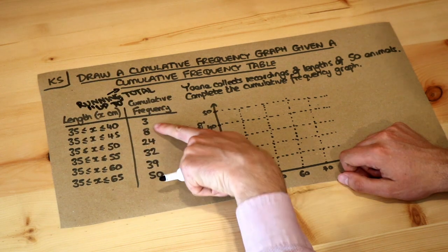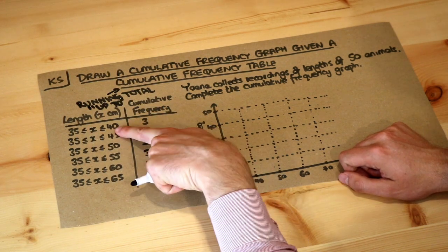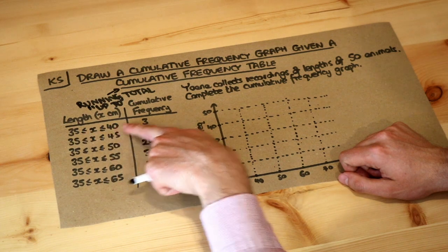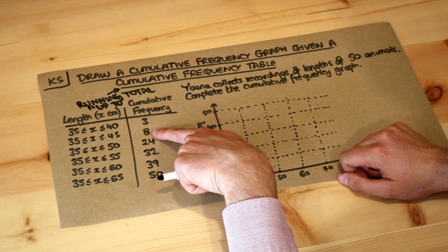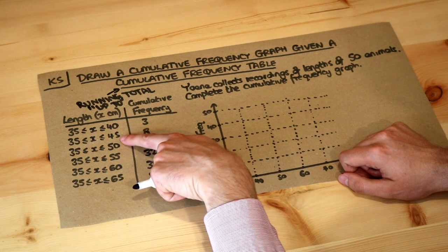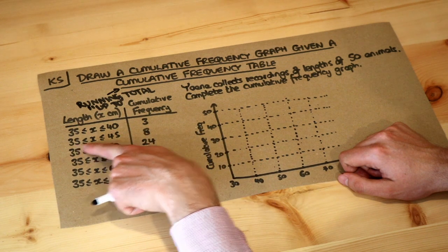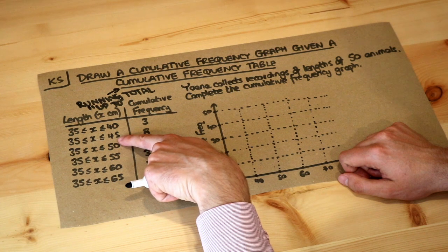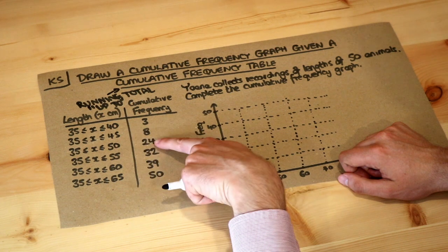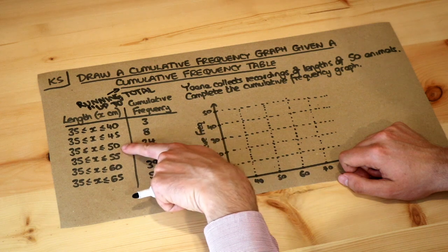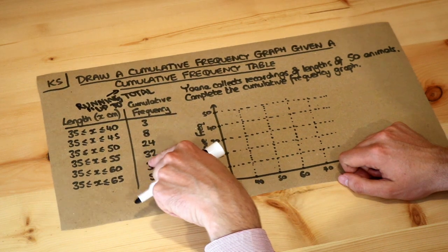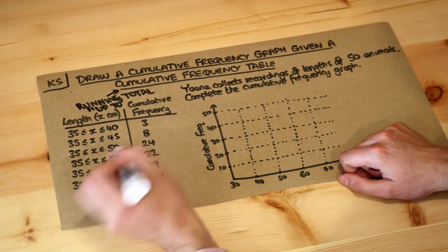So we have three things up to a length of 40, between 35 and 40, and then we have eight animals with a value of up to 45 centimetres — from the starting length of 35 all the way up to 45. Then we've got 24 animals up to a value of 50 centimetres, 32 animals up to a value of 55, and so on.